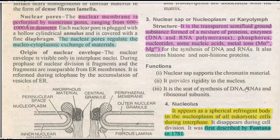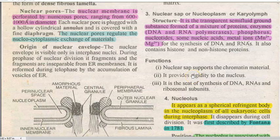The next structure is the nuclear sap, also called nucleoplasm or karyolymph. It is a transparent semi-fluid ground substance formed of a mixture of proteins, enzymes, DNA, RNA polymerases, phosphorus, nucleotides, nucleic acids, and metal ions involved in the synthesis of DNA and RNA. It also contains histone and non-histone proteins involved in the makeup of nucleosomes. Its functions include supporting the chromatin material in the nucleus, providing rigidity to the nucleus, and serving as the site for synthesis of DNA, RNA, and ribosomal subunits.